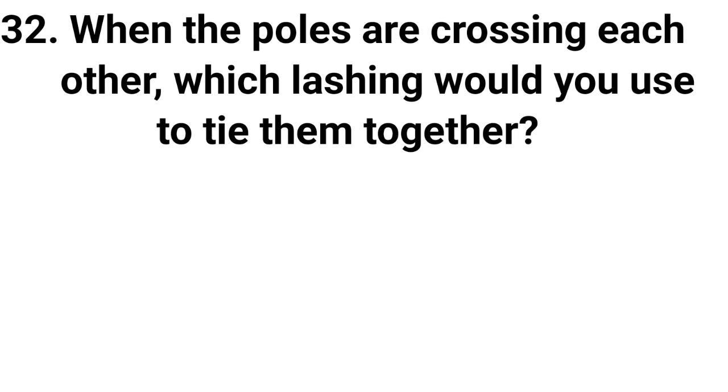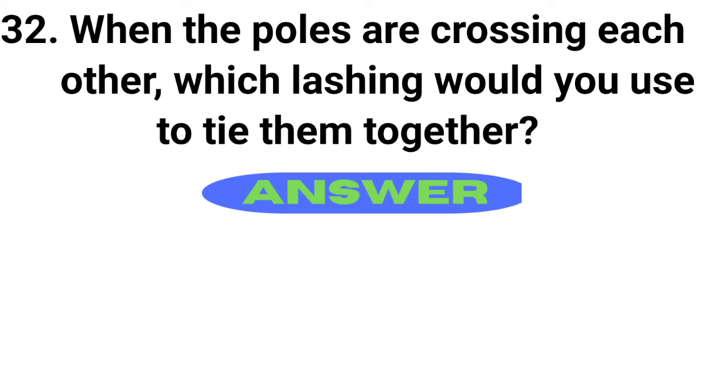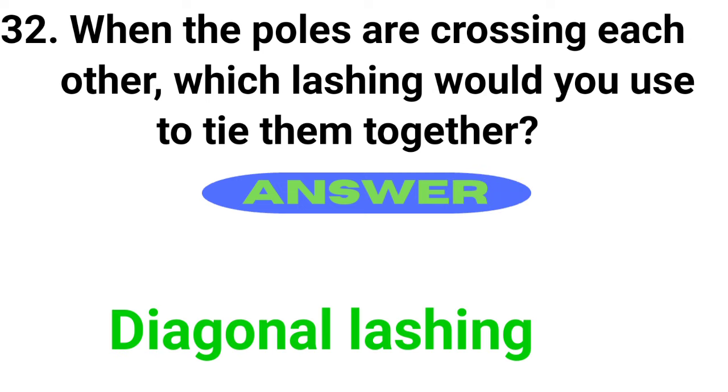Question 32: When the poles are crossing each other, which lashing would you use to tie them together? Answer is diagonal lashing.